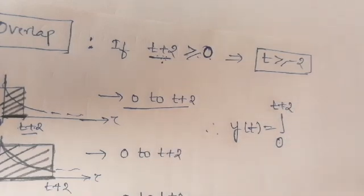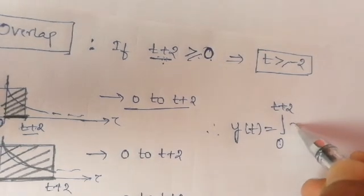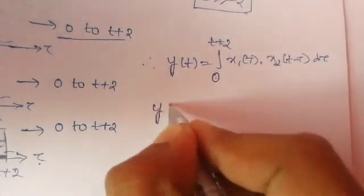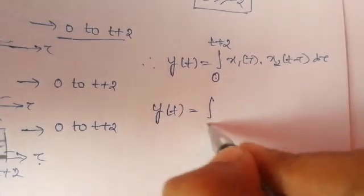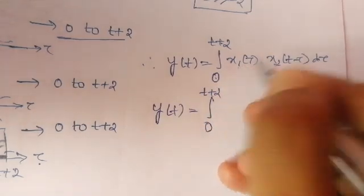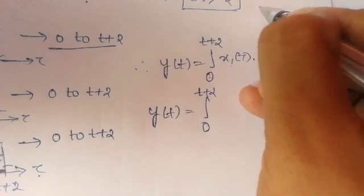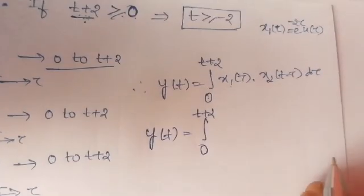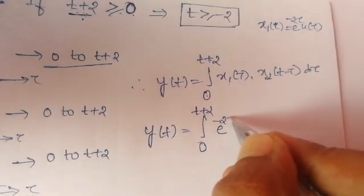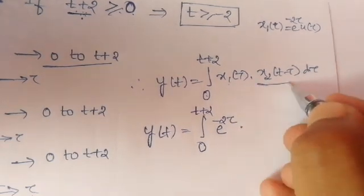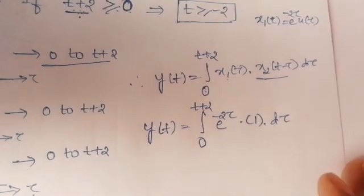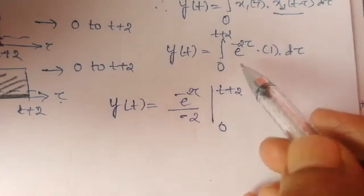Both sequences overlap, so now we substitute the amplitudes. The formula gives: y of t equal to integration from 0 to t plus 2 of x1 of tau into x2 of t minus tau d tau. Substituting: x1 of tau is e to the power minus 2 tau times u of tau, and x2 of t minus tau evaluates to 1, giving integration from 0 to t plus 2 of e to the power minus 2 tau d tau.